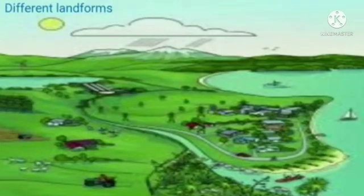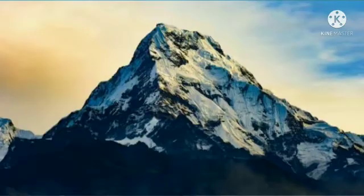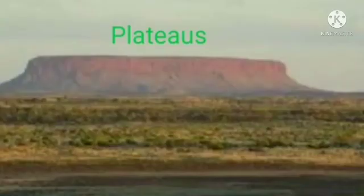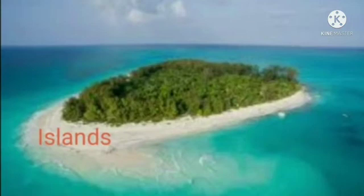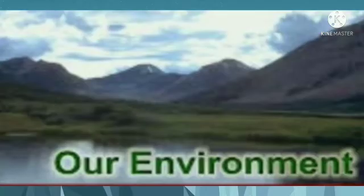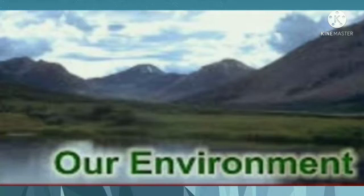The land in our environment is not of the same height everywhere. This unevenness gives rise to various land shapes, creating different landforms such as mountains, valleys, plateaus, plains, and islands — as studied in the third chapter. For a proper understanding of our environment, it is necessary to study the physical or natural setup of the land.